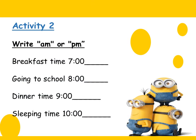Let's do activity 2 in your pocket. Write AM or PM. Breakfast time — it's 7, is it AM or PM, Primary 2? It's 7 AM, excellent, because it's from 12 at night up to 11:59 at morning. The next one: going to school at 8 o'clock — so it's 8 AM, also AM, excellent.